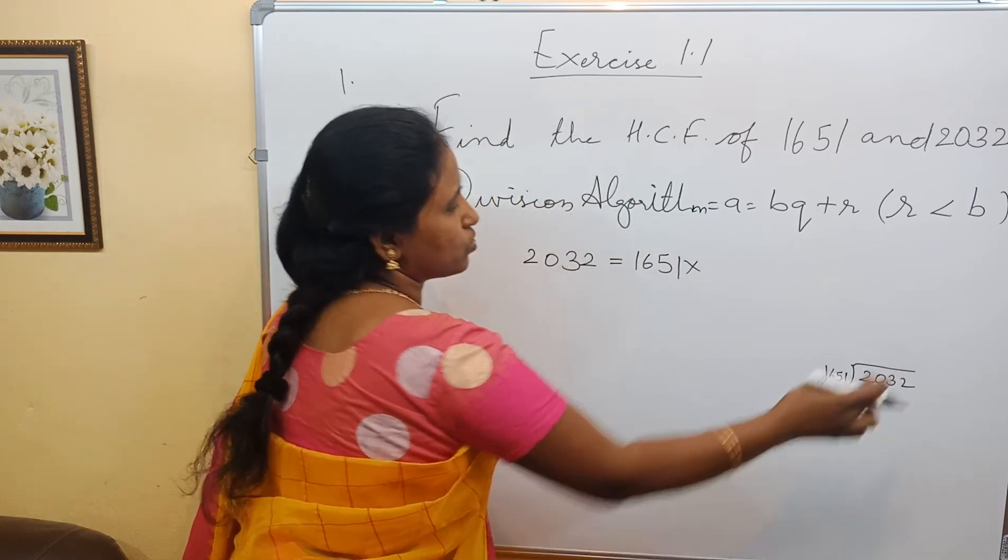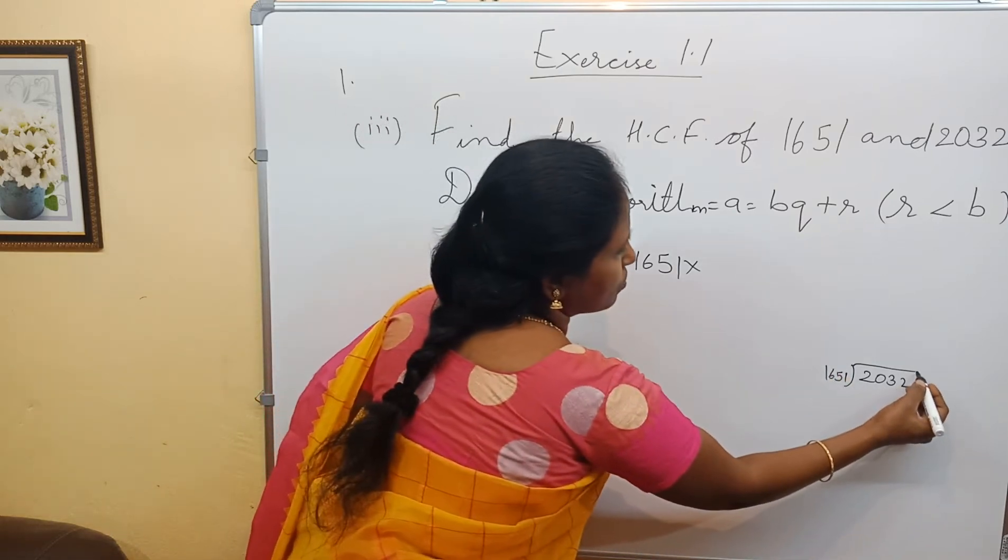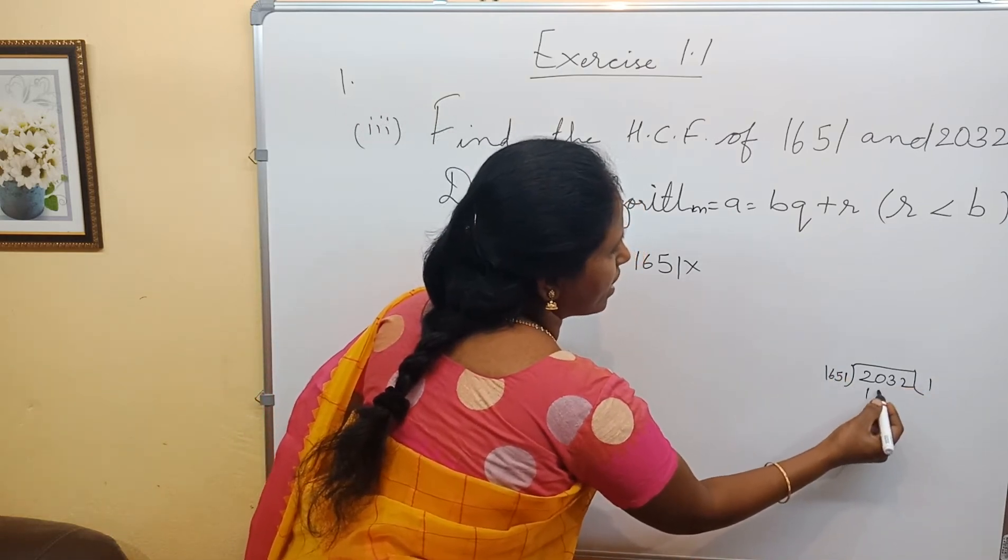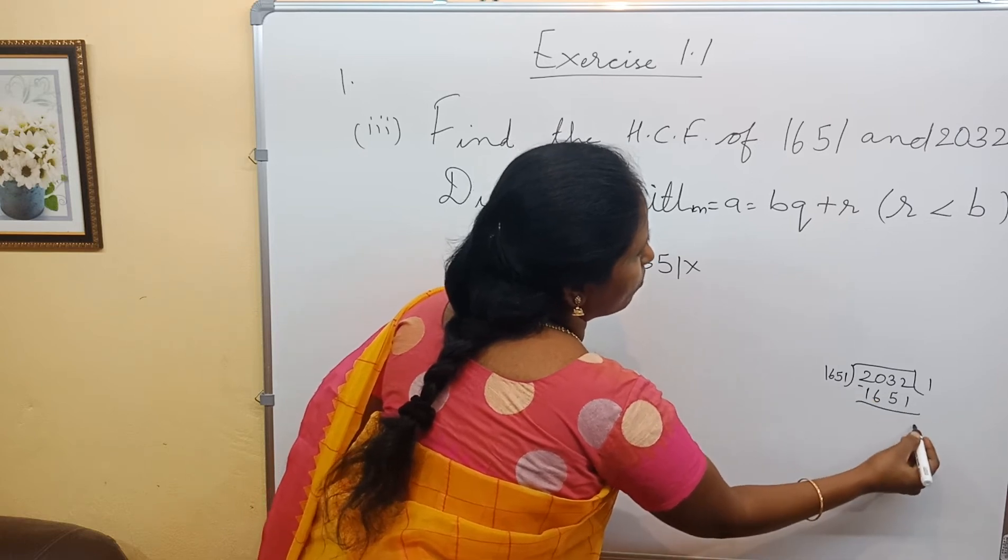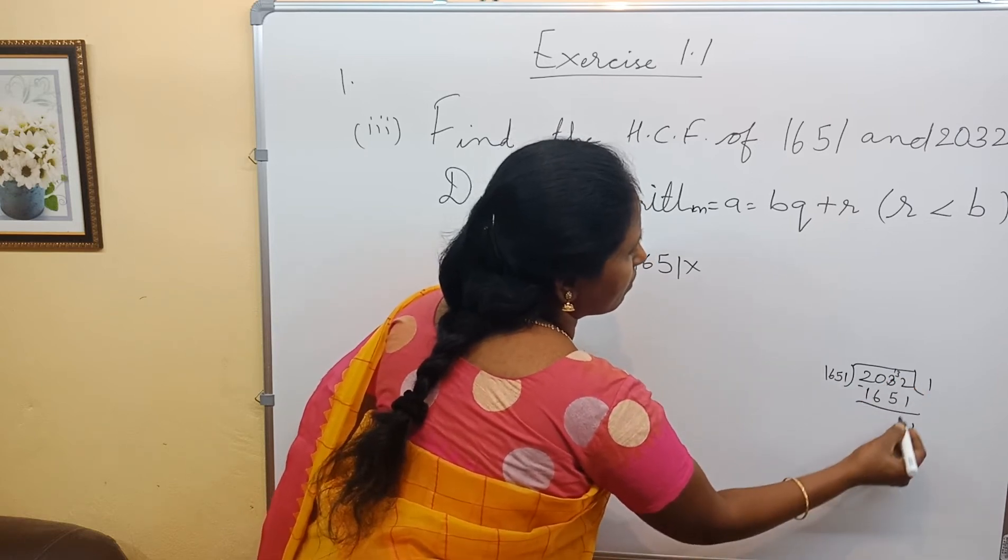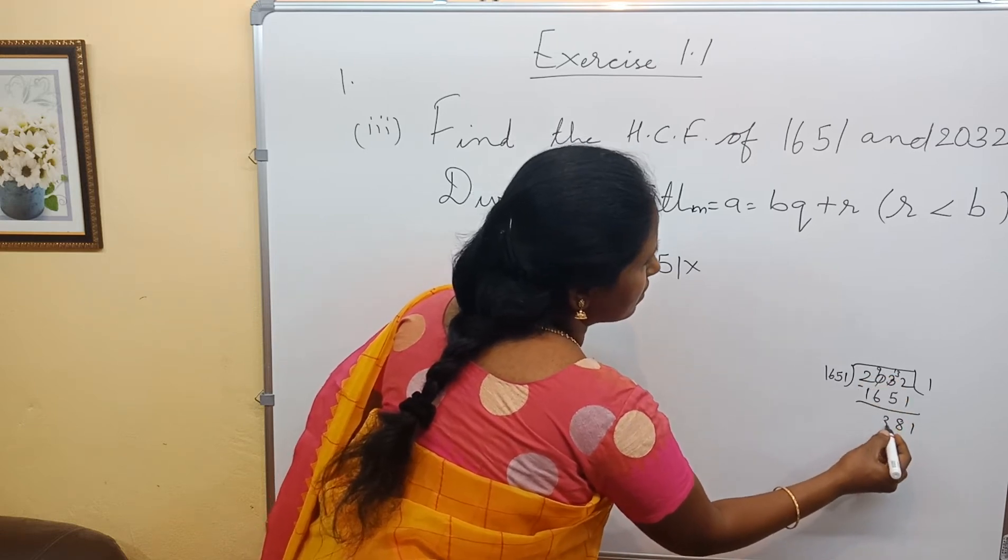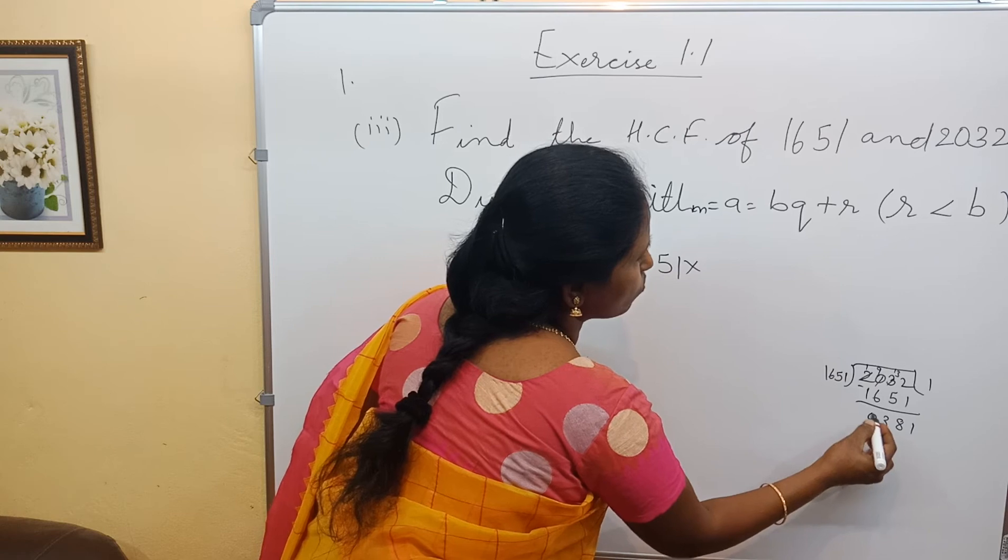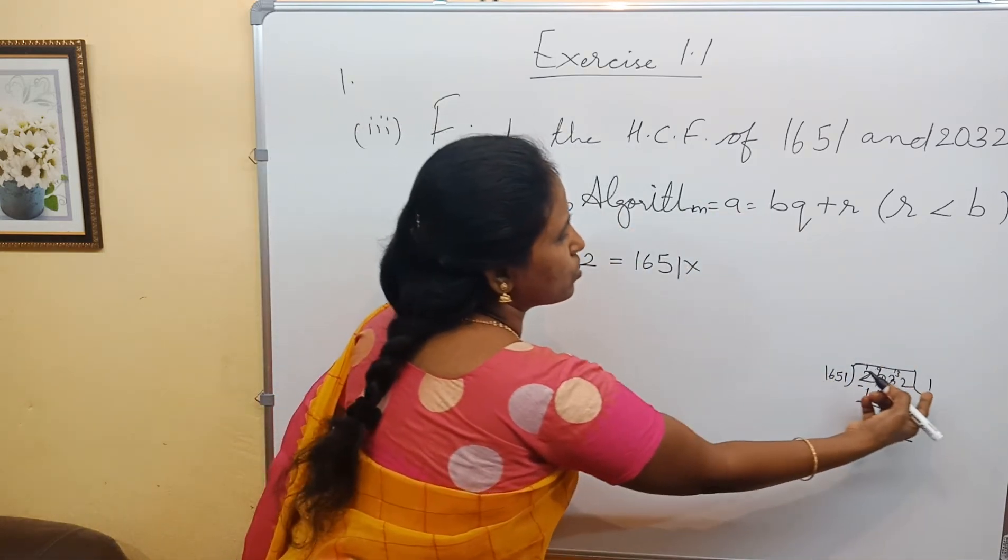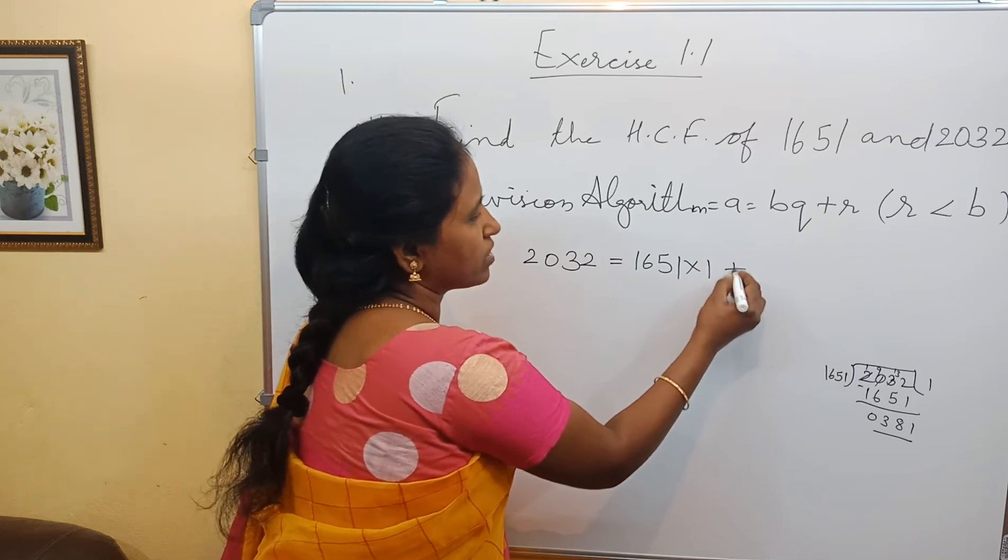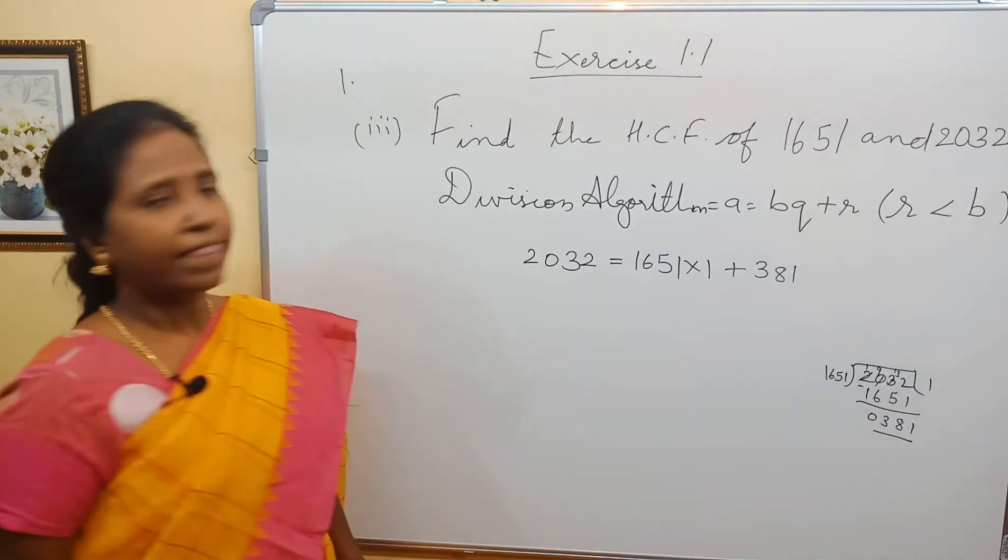This is 16 and this is 20, so 16 times 2 is 32, but it's not possible. So 1 times 1651 is 1651. What do you get? 2 minus 1 is 1, 30 minus 5 is 8, 9 minus 6 is 3, 1 minus 1 is 0. So 1651 into 1. What's our Q? 1. And what's our remainder? 381.